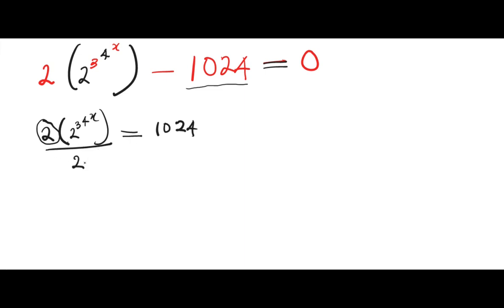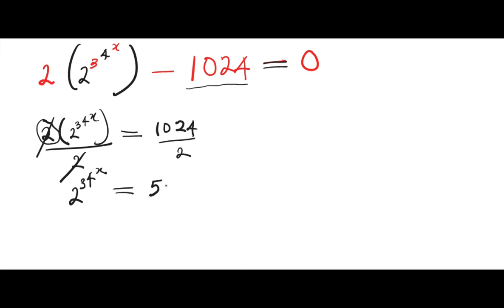This two will cancel this two, so we're gonna have two raised to the power of three raised to the power of four raised to the power of x, equals two, and 1024 divided by two is 512.